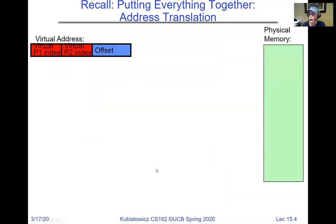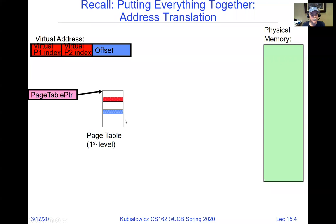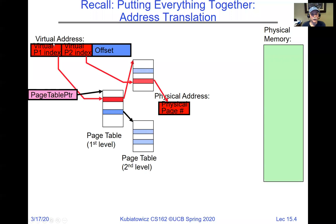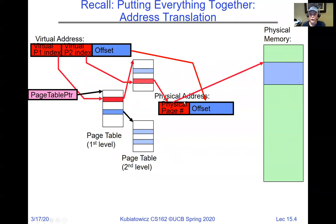Walking through the two-level page table: we grab some bits from the virtual address, look them up in the first level of the page table to get the second level page table, then use the next 10 bits in this 10-10-12 example to look up an entry. That gives us a physical page. So we started with a 20-bit virtual page ID that gives us a 20-bit physical page ID. We copy the offset and suddenly we have our physical address, pointing to a 4K chunk in DRAM.